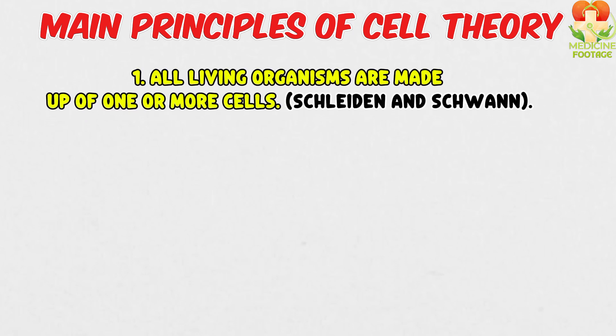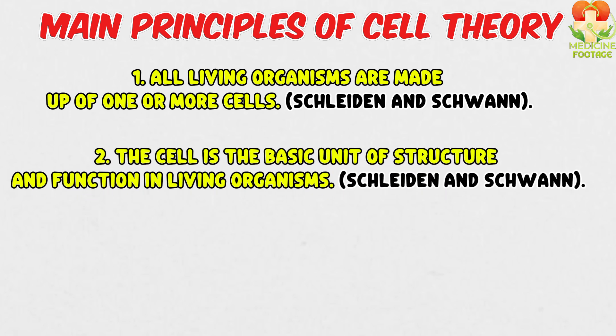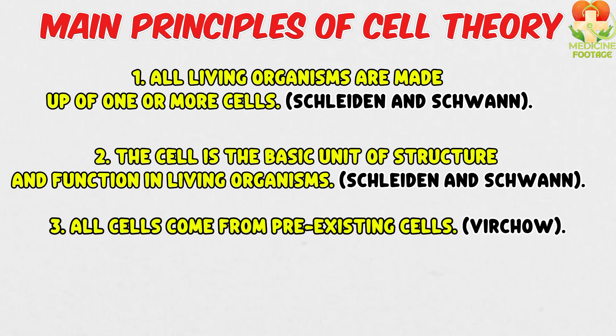The three main principles of cell theory. Let's break down the three core principles once more: first, all living organisms are made up of one or more cells — Schleiden and Schwann; second, the cell is the basic unit of structure and function in living organisms — Schleiden and Schwann; and third, all cells come from pre-existing cells — Virchow.